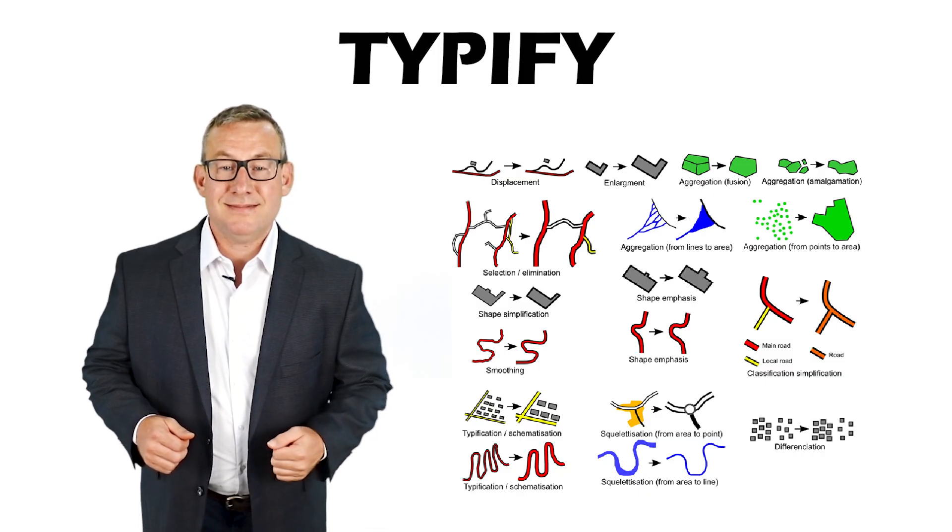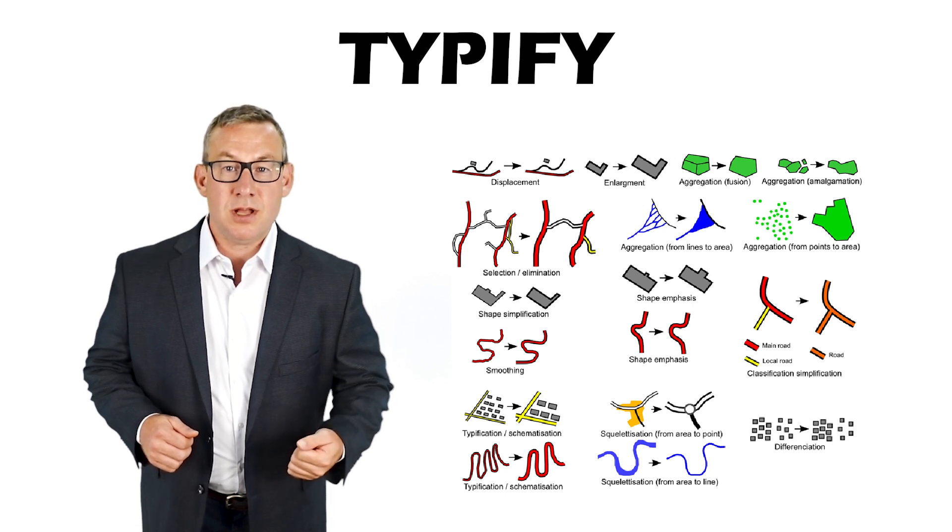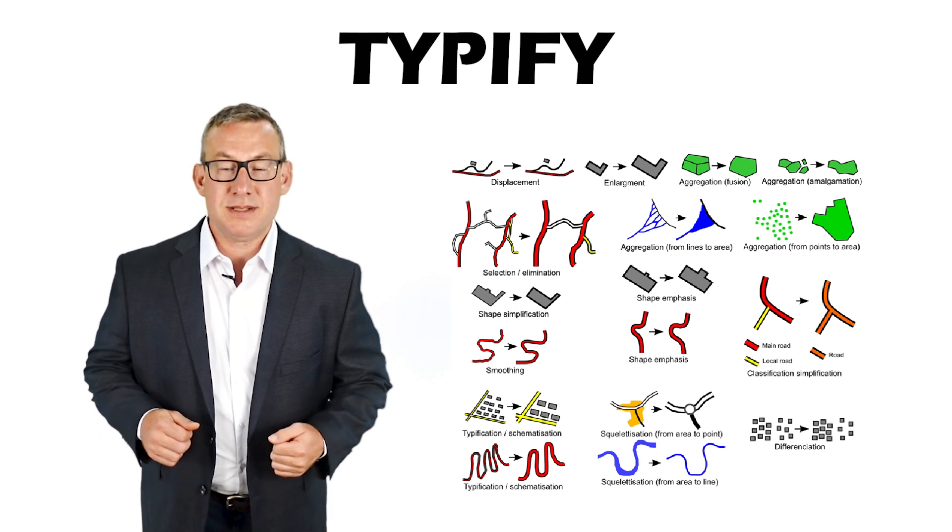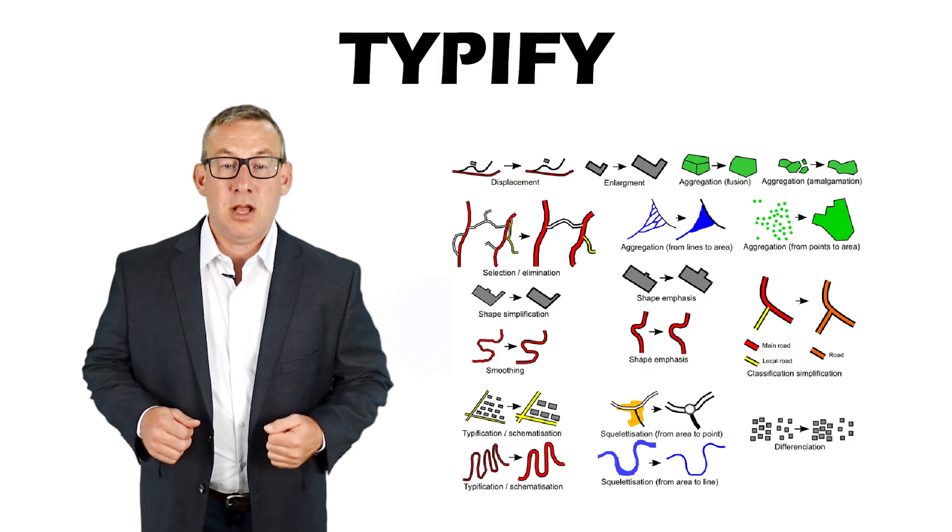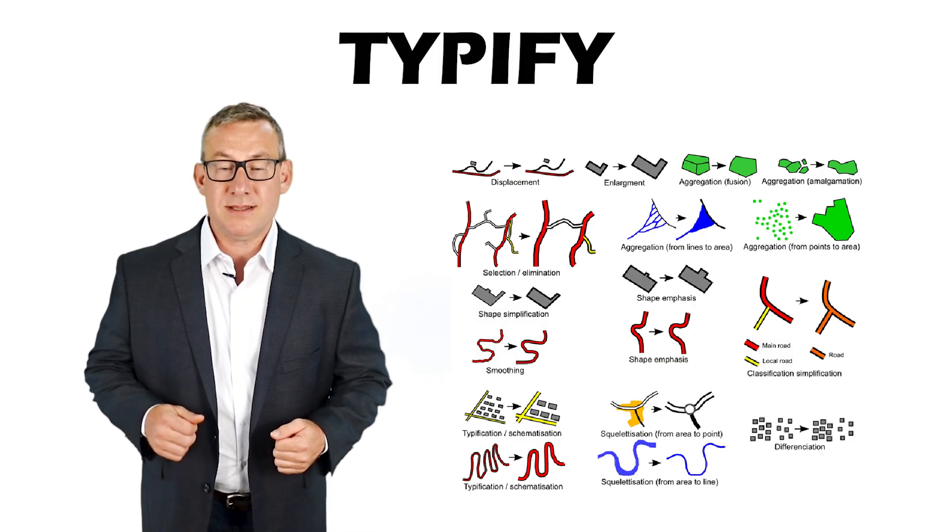Typify replaces a large set of features with a smaller number of features. For example, representing 10 points with just 3 or 4 points.